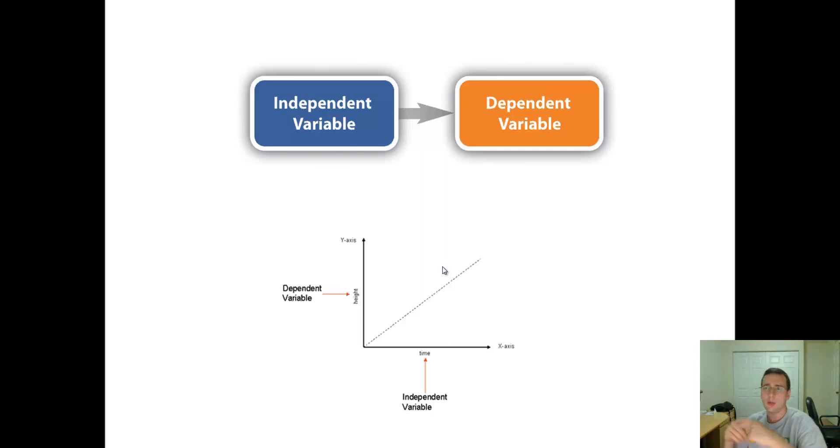And also make sure that when you describe the variables, you're saying in a way that makes sense. You know, don't say the light, for example, in that example. You should say the intensity of the light, which is what you're actually manipulating about the light. And likewise, when you're talking about the dependent variable, don't just say the growth. Be specific. The growth, the vertical growth of the plants. The more specific you are, the better you will be when you're designing your experiment.